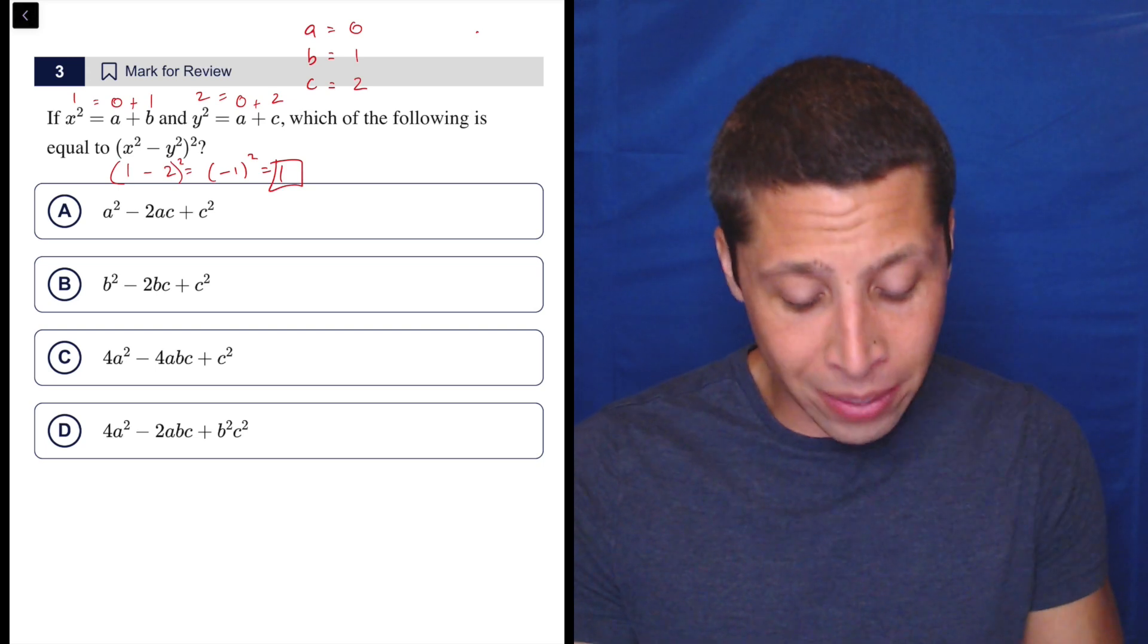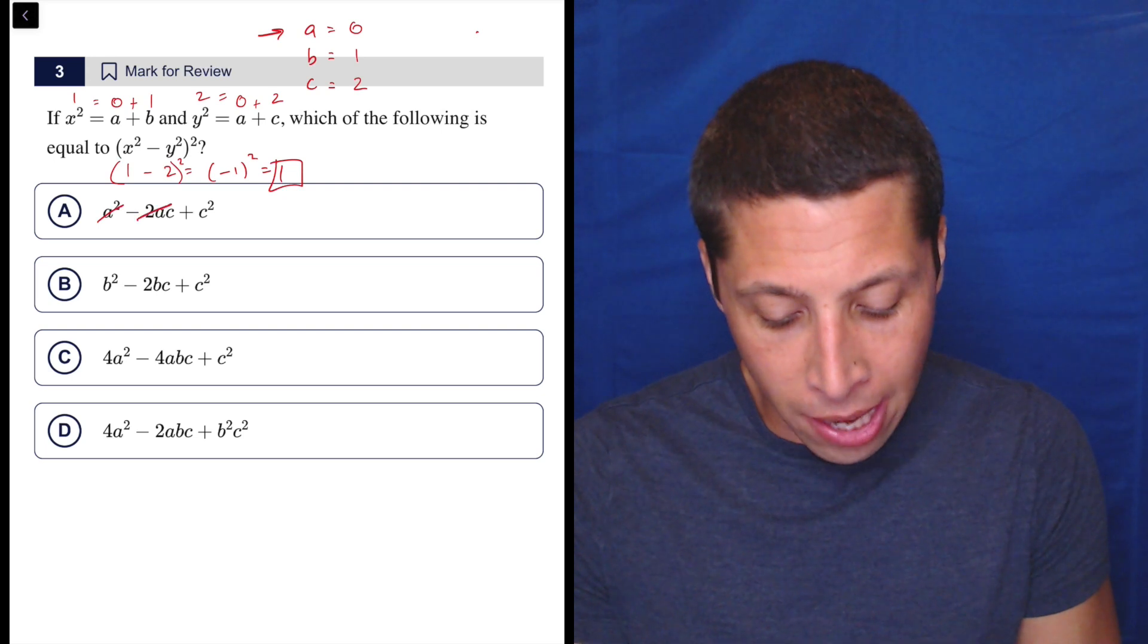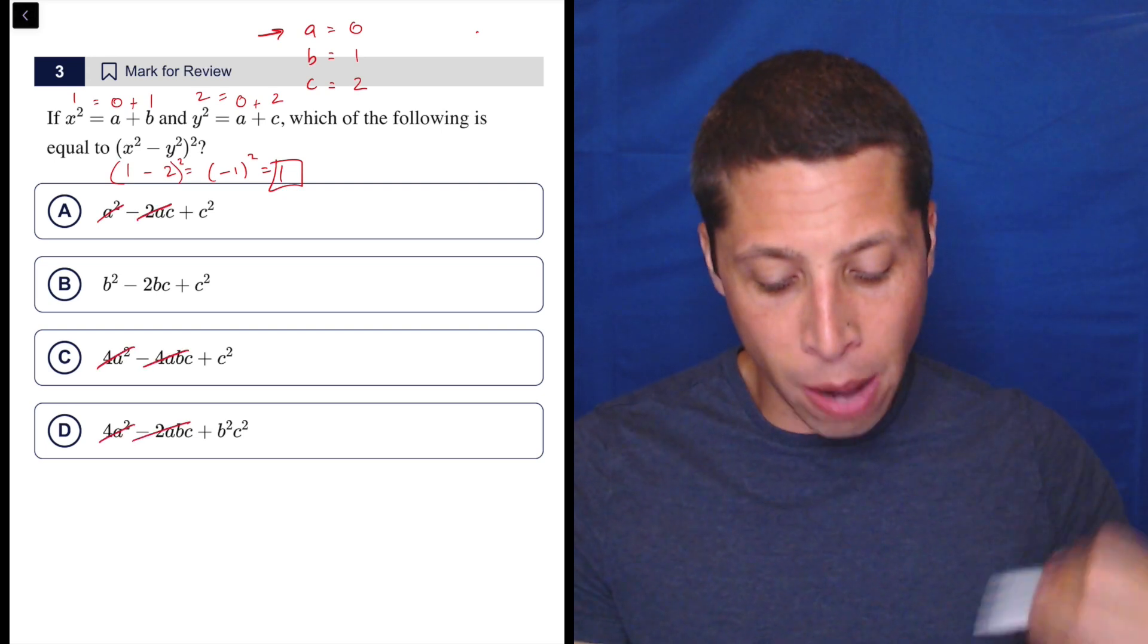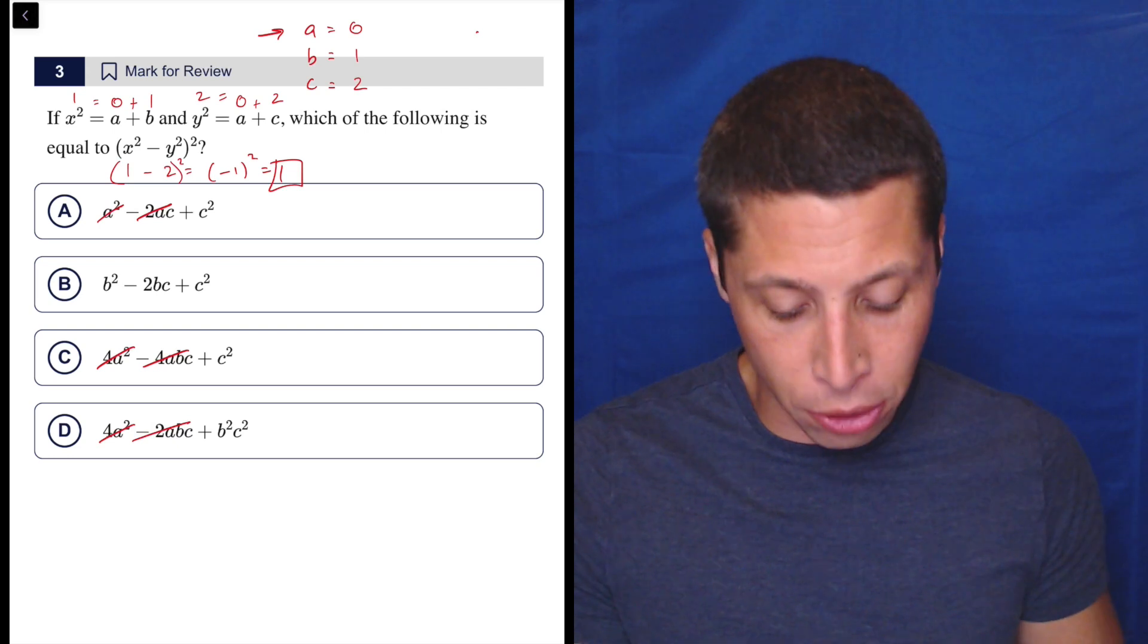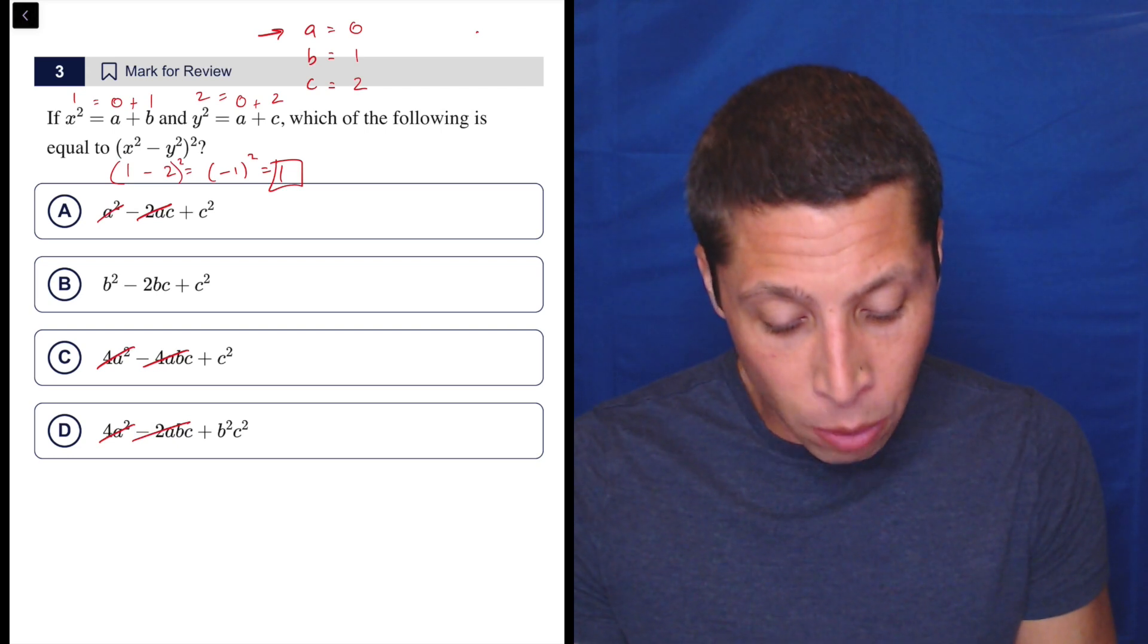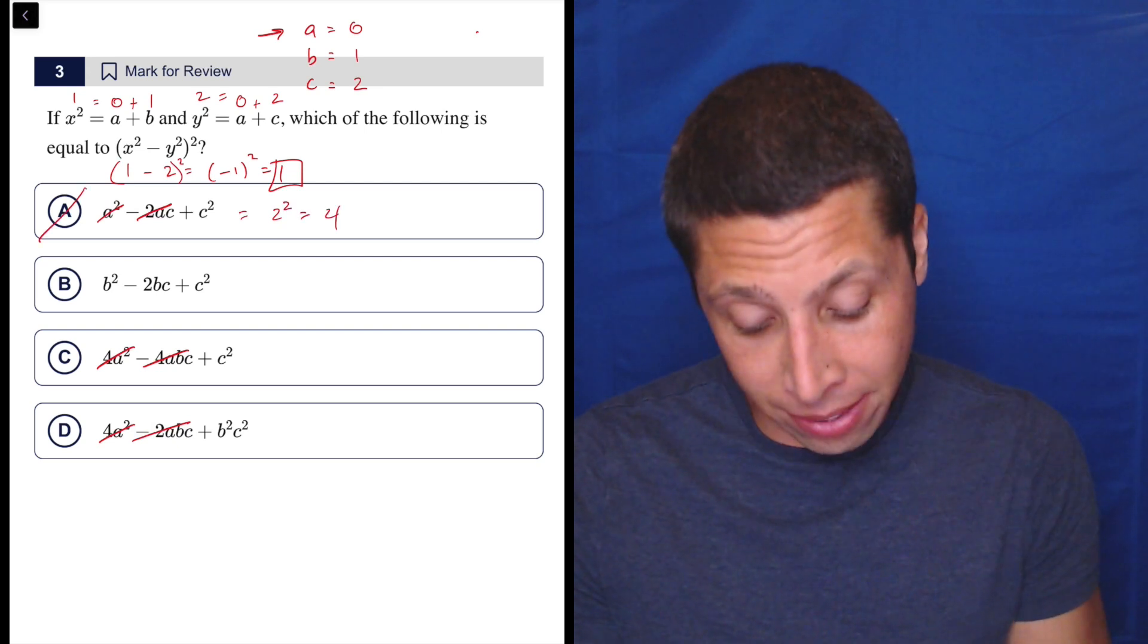Now let's go to the choices. Now again, because A is 0, I have a little bit of an advantage because anything with an A, I can kind of kill right away. So I'm hopefully now just going to focus on these B and C terms and hopefully that gives me one answer. So let's see. C we said is 2. So this becomes 2 squared. That's 4, not 1. So that's not right.